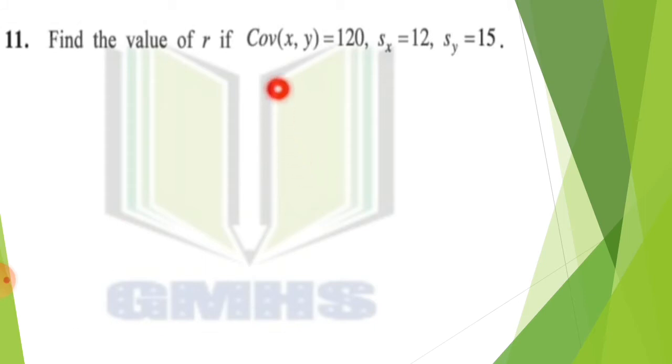Question 11, let's start. Find the value of R if covariance of XY is 120, S of X is 12 and S of Y is 15. If you have any doubts or queries or difficulties, I have a video uploaded here in which in one video, in 10 minutes, I have explained all the formulas in the whole chapter. If you will see that video first and then continue, it will be better.